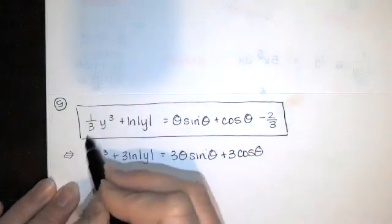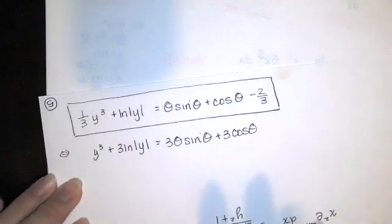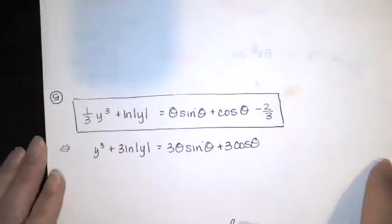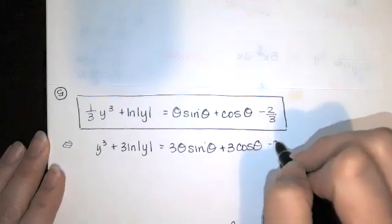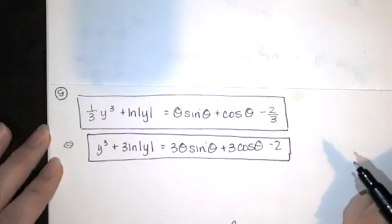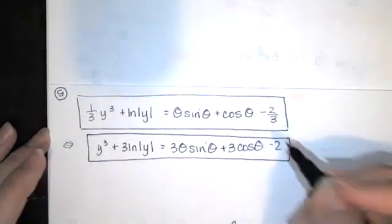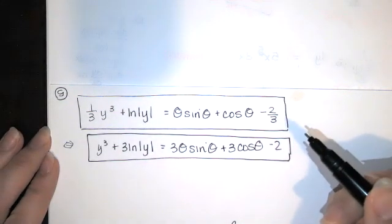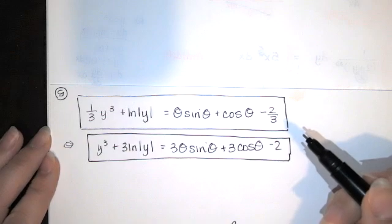When I multiply this by three, the one third times three is one. When I multiply this by three, the negative two thirds times three is just negative two.